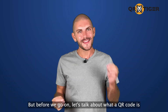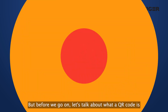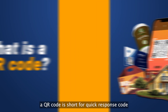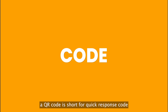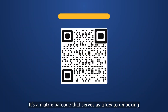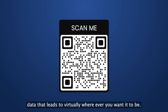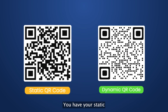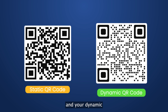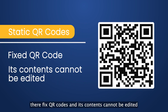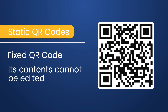Before we go on, let's talk about what a QR code is. A QR code is short for Quick Response Code. It's a matrix barcode that serves as a key to unlocking data that leads to virtually wherever you want it to be. There are two types of QR codes. Static QR codes are fixed and their contents cannot be edited.